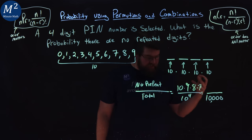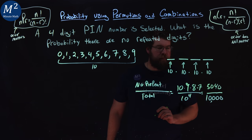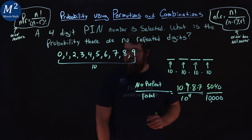So multiply 10 times 9 times 8 times 7, which is 5,040. So if we simplify this as a decimal,